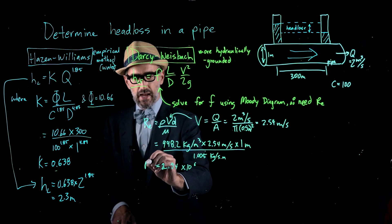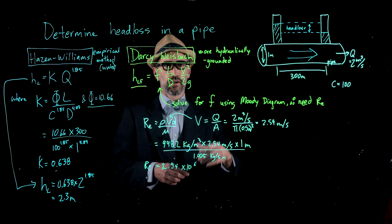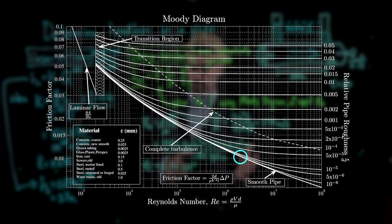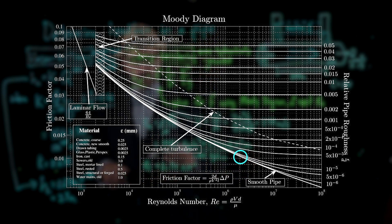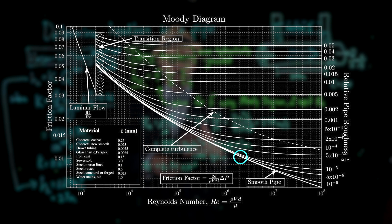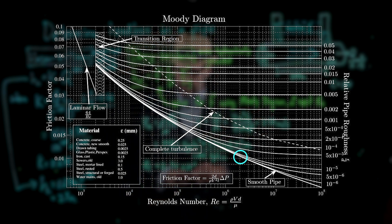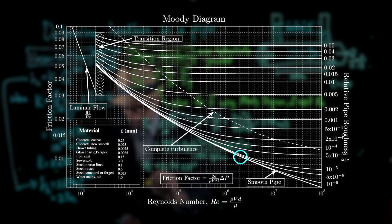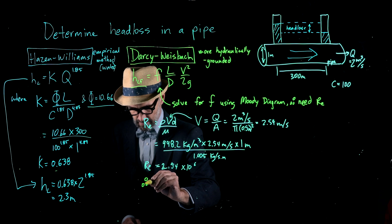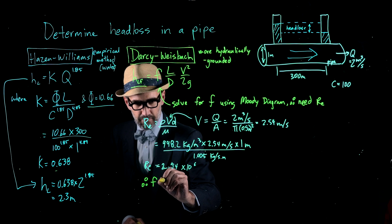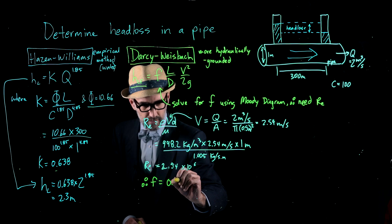With that, we move to the Moody diagram. You can see the Moody diagram here — I've circled the value for the Reynolds number of 2.54 times 10 to the 6 for a smooth pipe, which is what we established originally. Taking that over to the left-hand side of the Moody diagram gives an F value of 0.012.